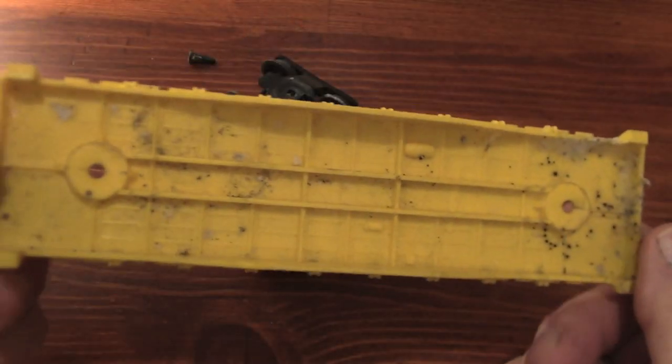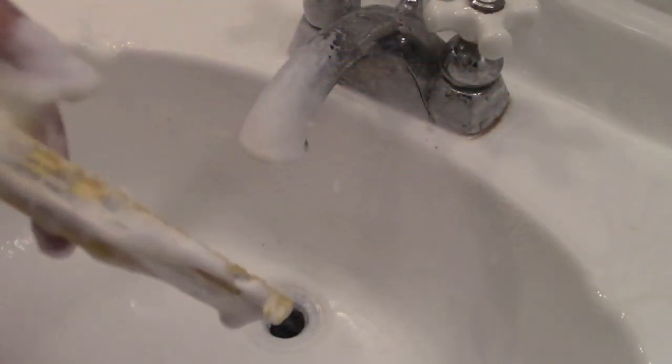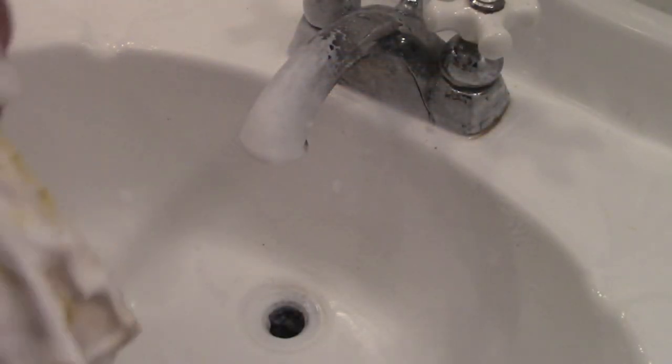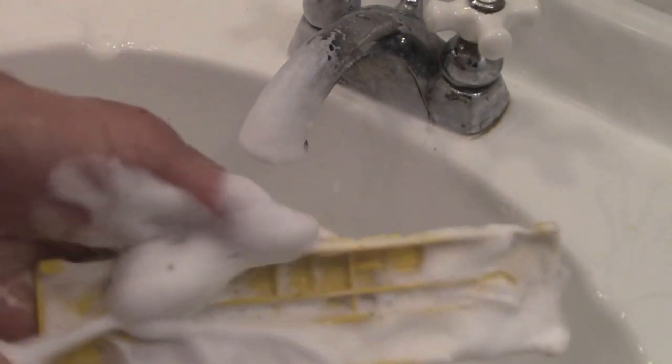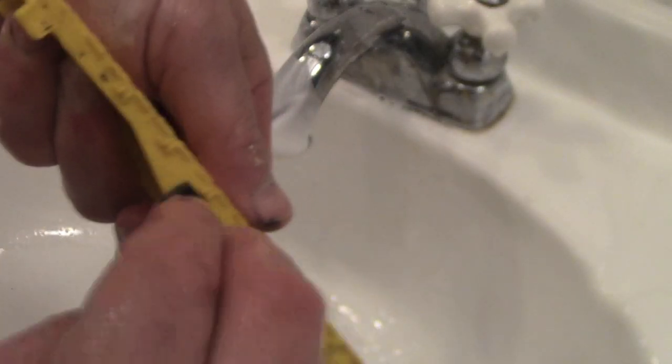In the 1970s the lettering was applied with some sort of heat stamping process so the words and numbers are actually imprinted into the plastic. Wet sanding with 400 grit paper gets rid of most of it but I have to be careful not to remove the molded rivet details.